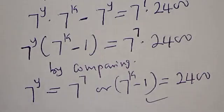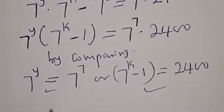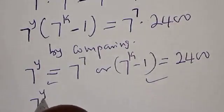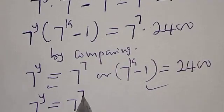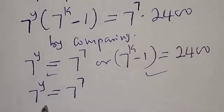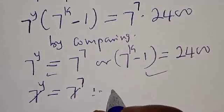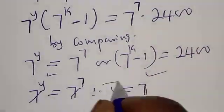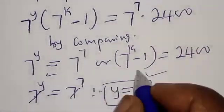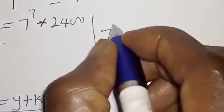For the first case: 7 raised to power y equals 7 raised to power 7. Since they have the same base, the bases cancel, therefore y is equal to 7.